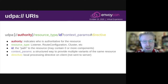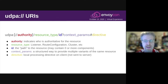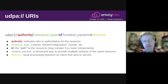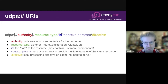The key to addressing the limitations that Harvey spoke about is this new naming scheme for XDS resources, in which resource names are represented as a UDPA URI. Let's talk about the anatomy of a UDPA URI. The first part of the URI that's interesting is the authority. This indicates who's authoritative for the resource, which is not necessarily the same as the XDS server that's used by the client.